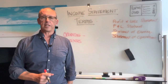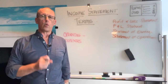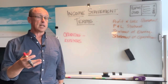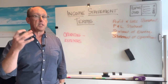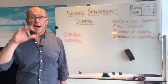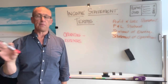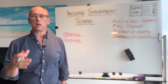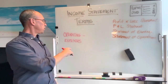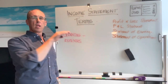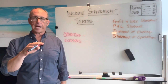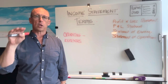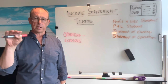Hey guys, Brad Flynn here and we're going to continue talking about the different names for the different parts of an income statement. They all mean the same thing and it gets a bit confusing sometimes. So now we're going to look at the operating expenses — this is the line that comes below the gross profit.